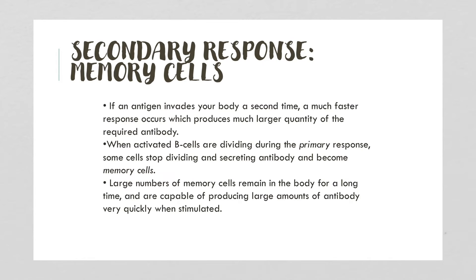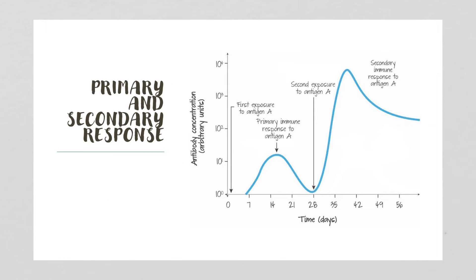The secondary response involves memory cells. If an antigen invades a second time, a much faster response occurs, producing larger quantities of the required antibody. During the primary response, some activated B cells stop dividing and become memory cells that remain in the body for a long time. The diagram shows that after a second exposure, antibody production is extremely rapid and remains elevated for a much longer period compared to the primary response.